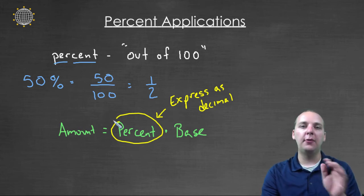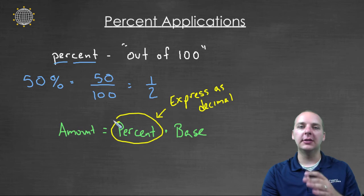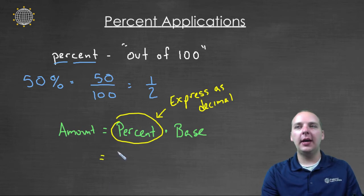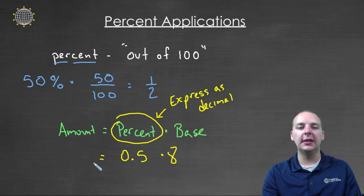So for example, if your problem had forty-eight percent, you wouldn't use forty-eight, you would use point four eight. Because that's forty-eight percent expressed as a decimal. Here's a simple example. Let's say we had fifty percent of eight. What's fifty percent of eight? Well we would say zero point five times eight. That's fifty percent of eight. I expressed fifty percent as a decimal. And we would get four. Four is fifty percent of eight.